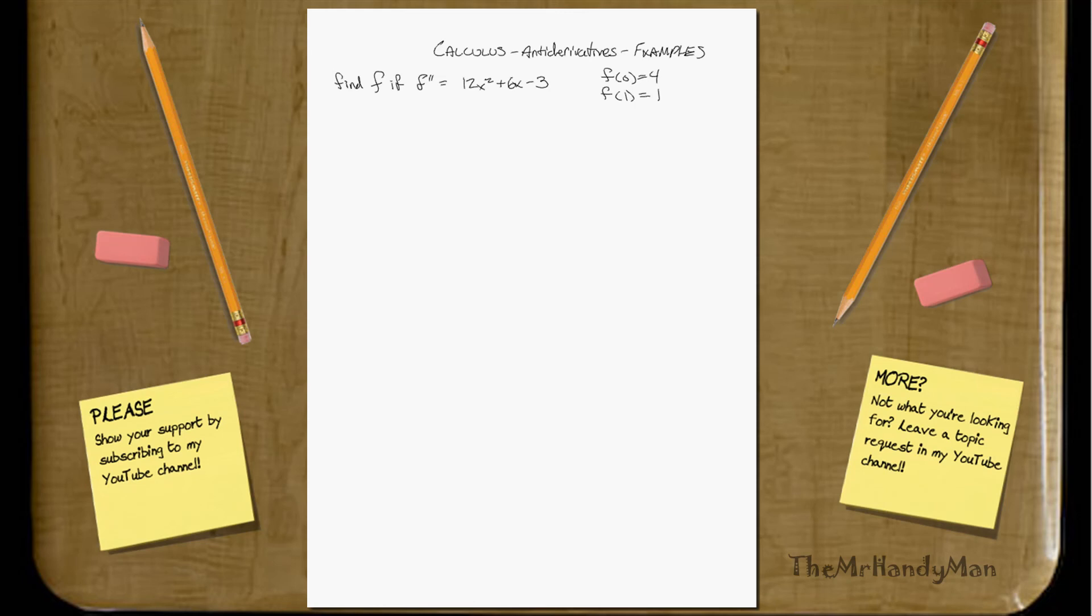Hi there, this is Annie Derivatives' Examples. Let's just run through a few examples of this to really solidify it. You're going to need to know a lot about this in the integrals section. So, we find f if f'' equals 12x² + 6x - 3.